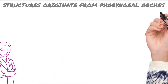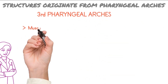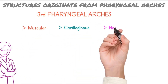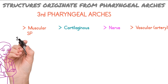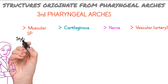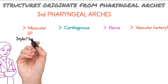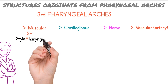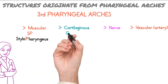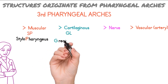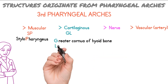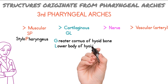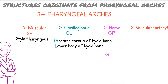Now the structures formed from the third pharyngeal arch: the muscular component has the mnemonic 'SP,' which stands for stylopharyngeus muscle. You can easily remember that S stands for second and P stands for pharynx — all pharynx muscles are formed from the fourth pharyngeal arch except stylopharyngeus, which is formed from the third arch. The cartilaginous component forms the greater cornu of the hyoid bone and lower body of the hyoid bone — opposite to hyoid structures from the second arch. Nerve supply is from the ninth cranial nerve, the glossopharyngeal nerve. Arterial supply is from the common and internal carotid arteries, as both are near the hyoid bone.